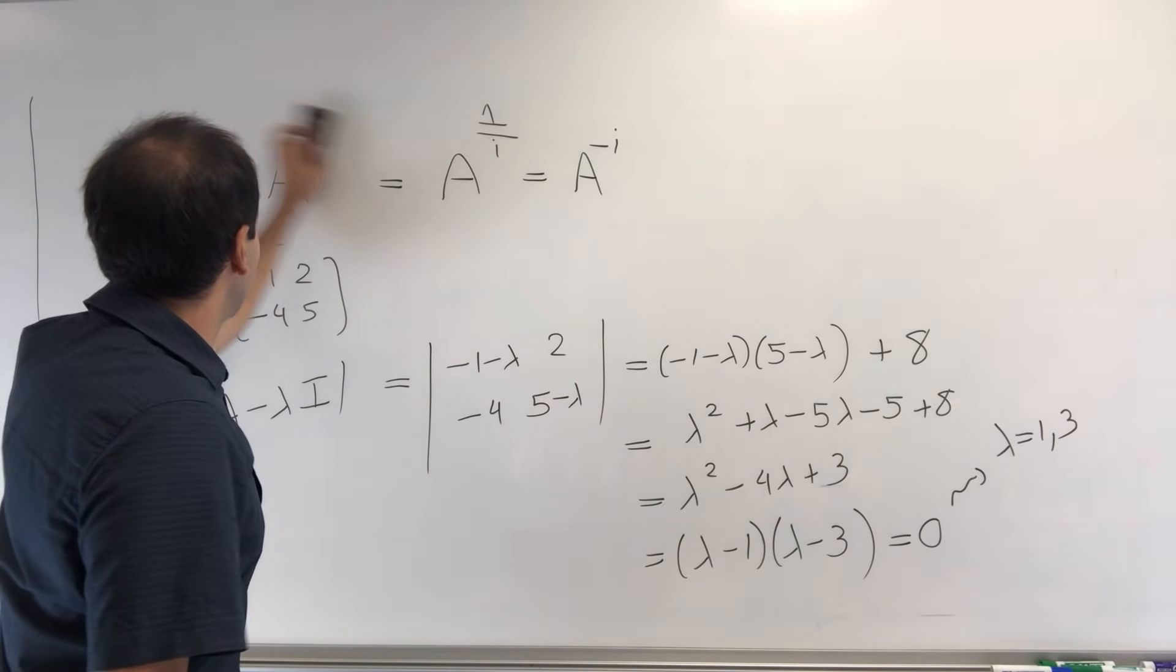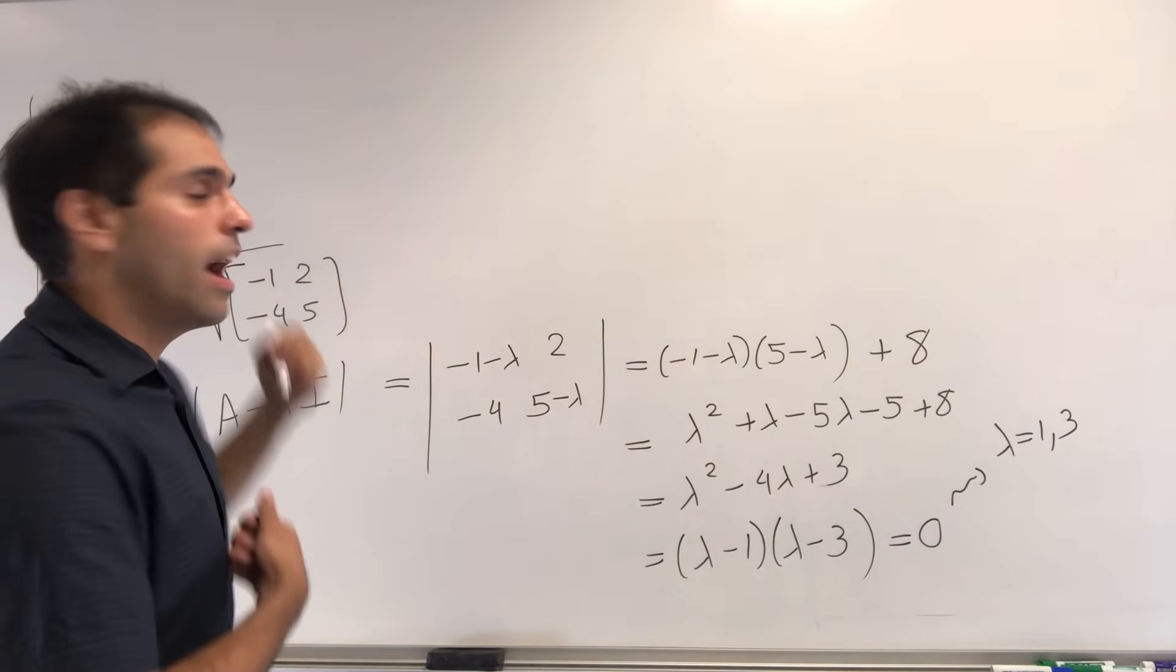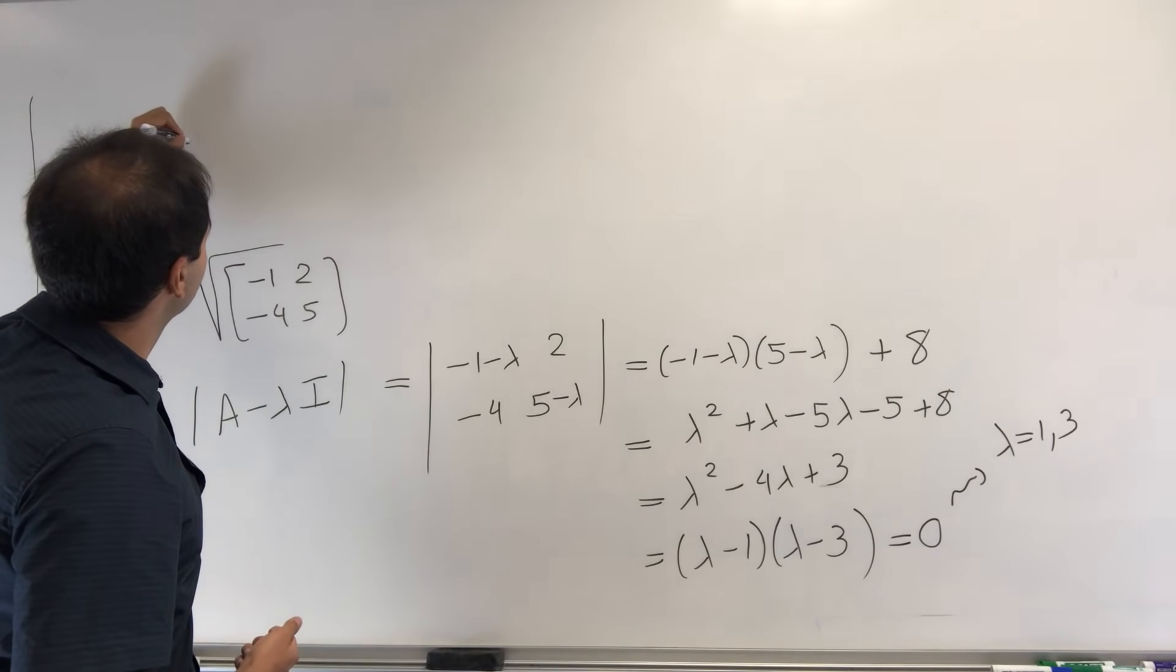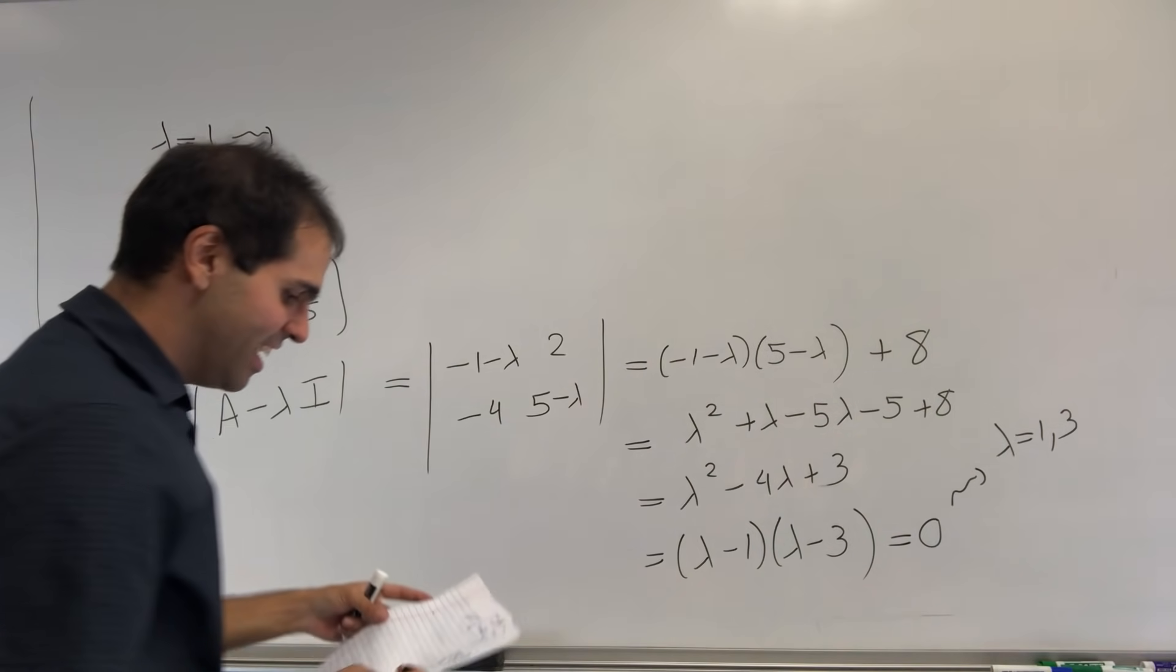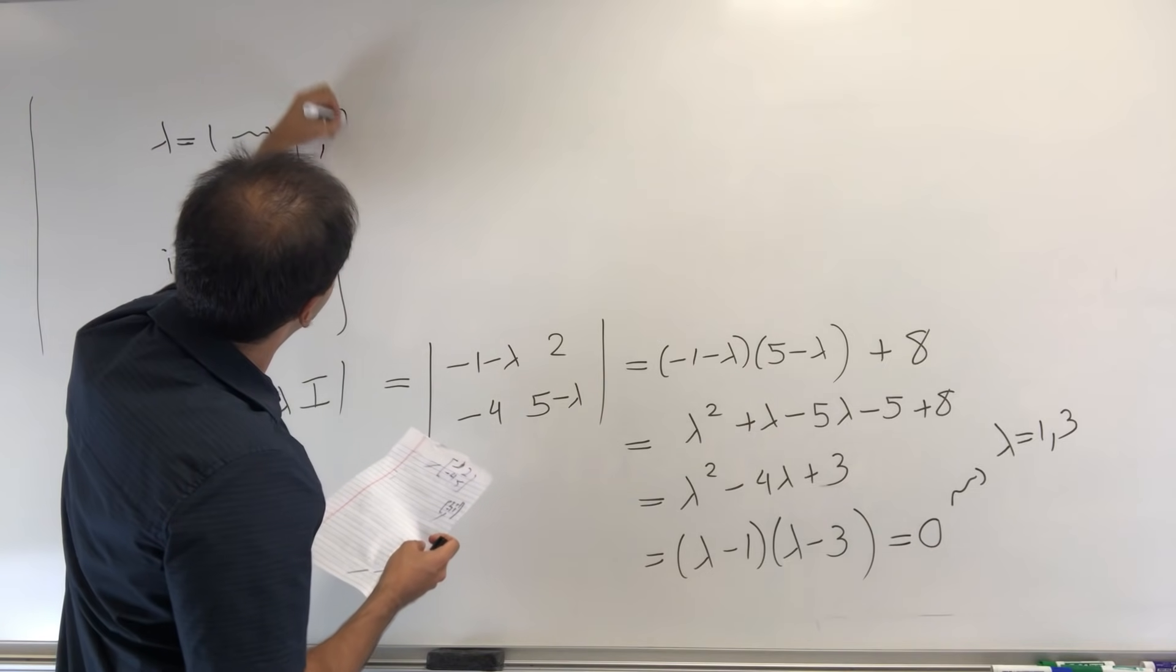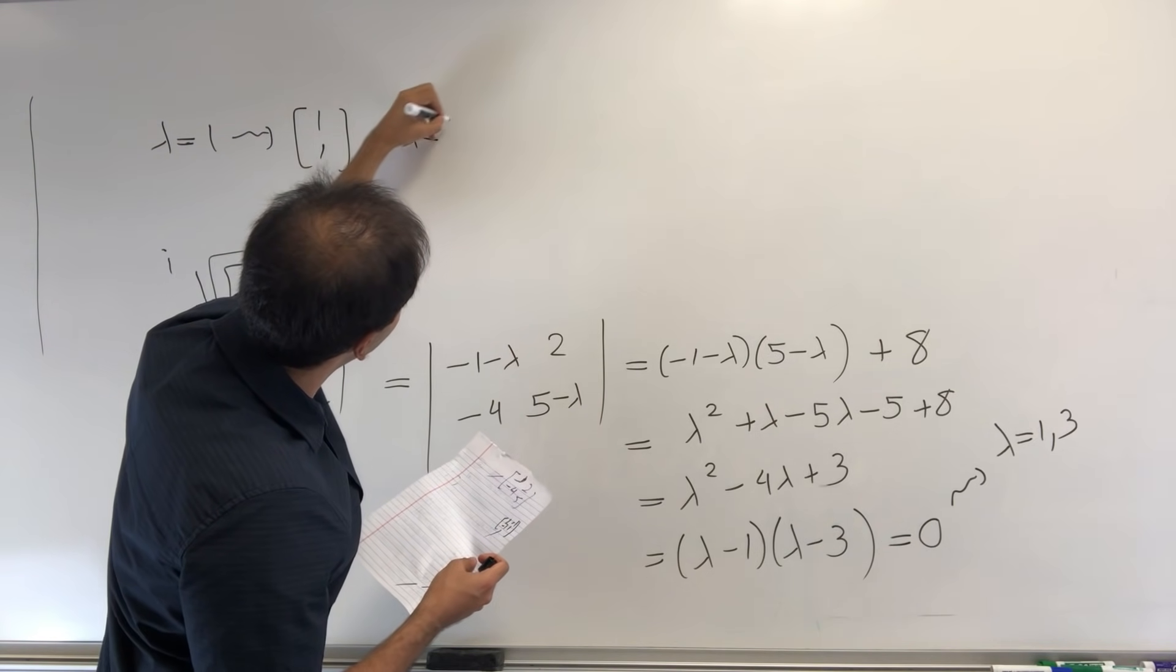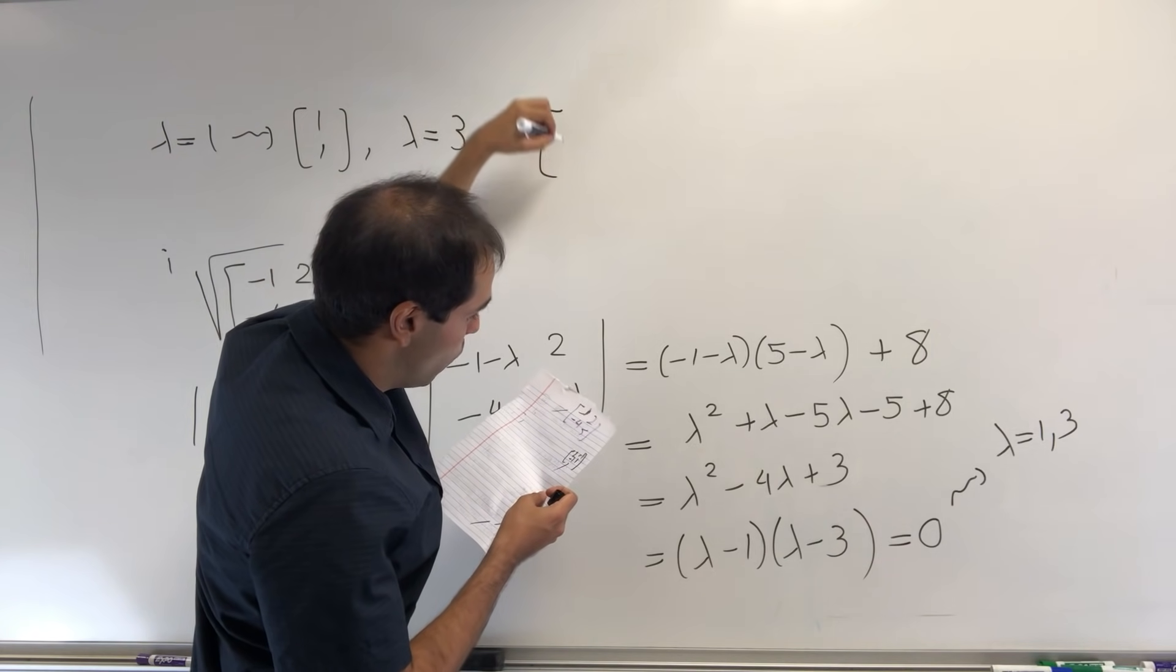But for every λ you found, you find a corresponding null space. So in the end, what is our result? Our result is that for the eigenvalue 1, the corresponding eigenvector is [1, 1]. And for the eigenvalue 3, the corresponding eigenvector is [1, 2].